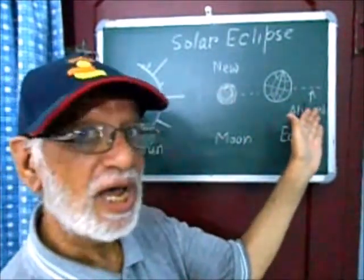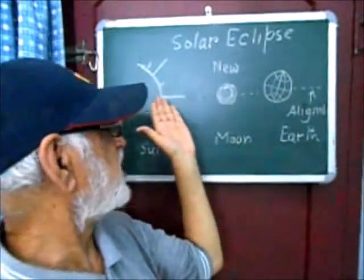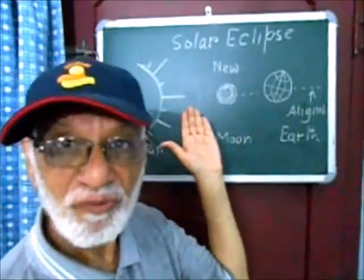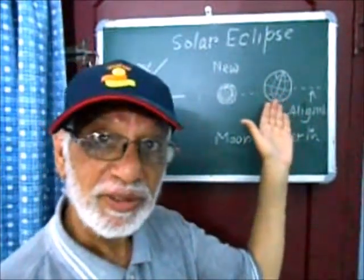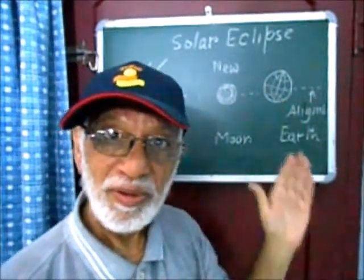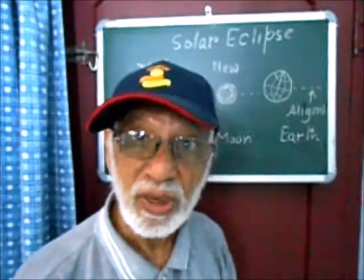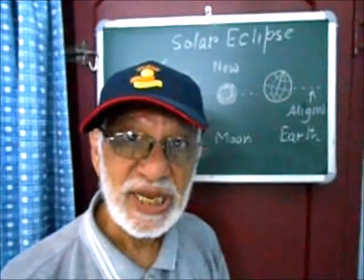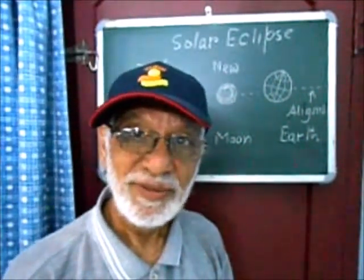Then the moon obstructs the light from the Sun and casts a shadow on the Earth. People in this shadow, which is also called the total shadow or umbra, will see the Sun as dark.